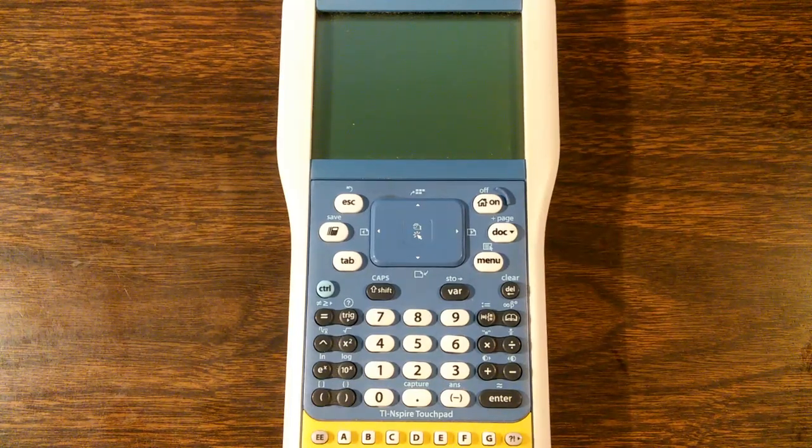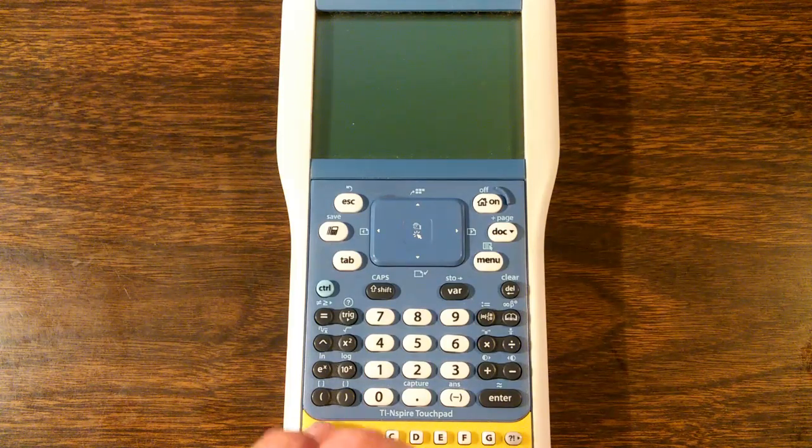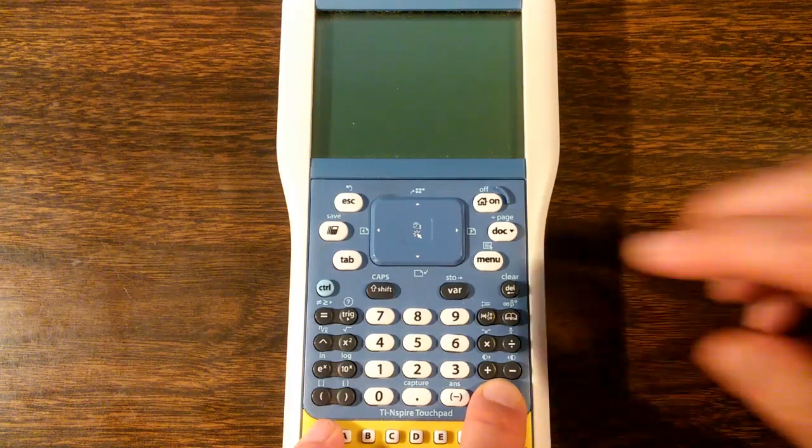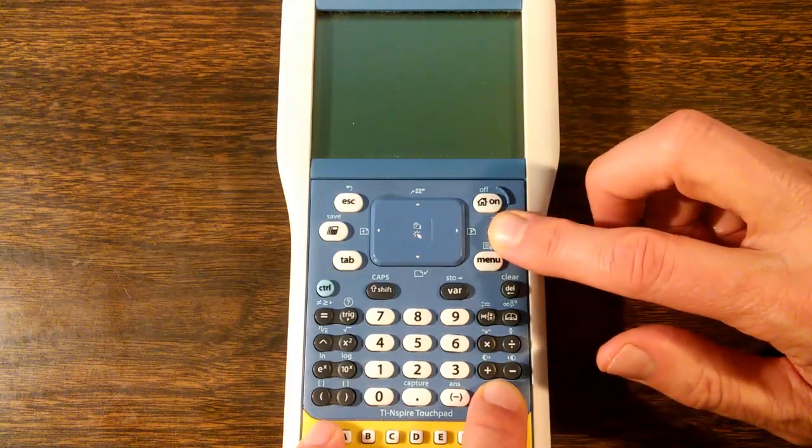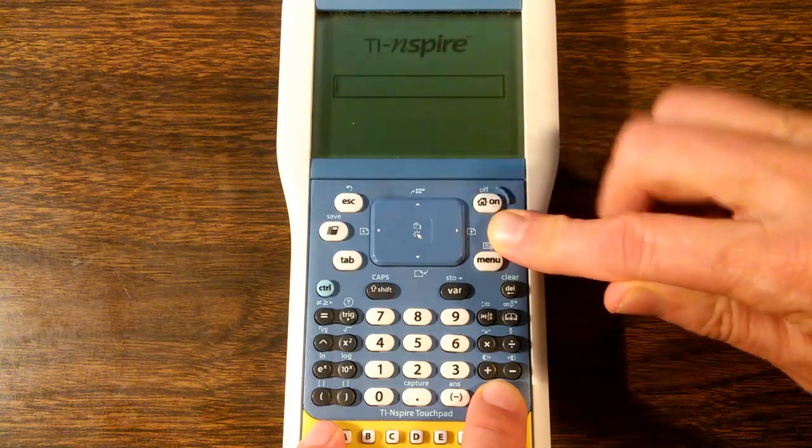In order to do that, we have to get the calculator into maintenance mode. We do that by pressing the double E key, the enter key, and the dock key, all holding them down, all three keys, and then press the on key.